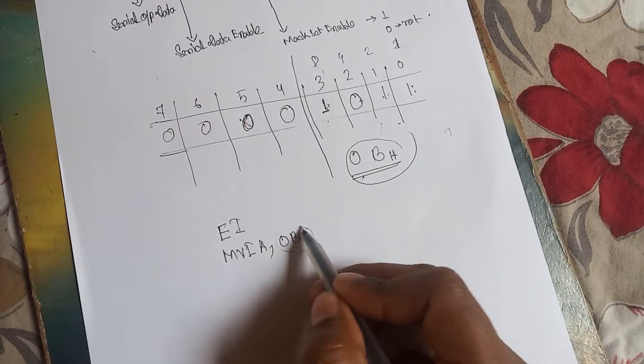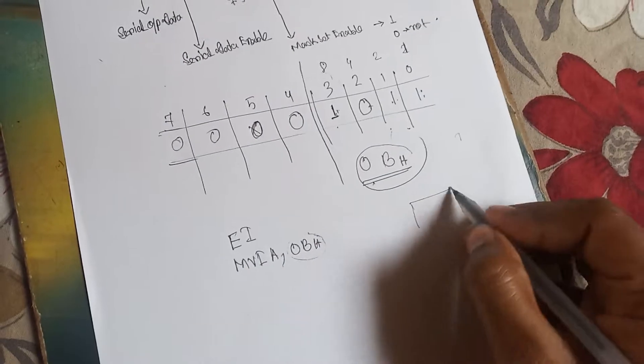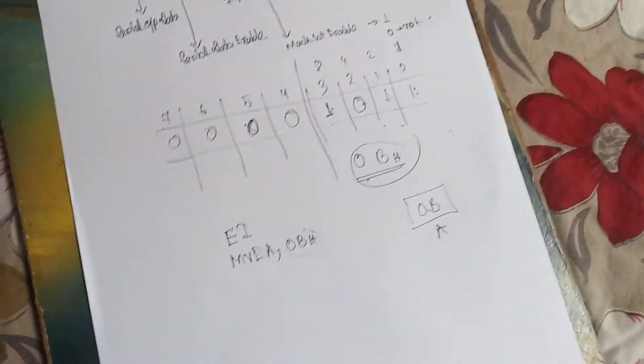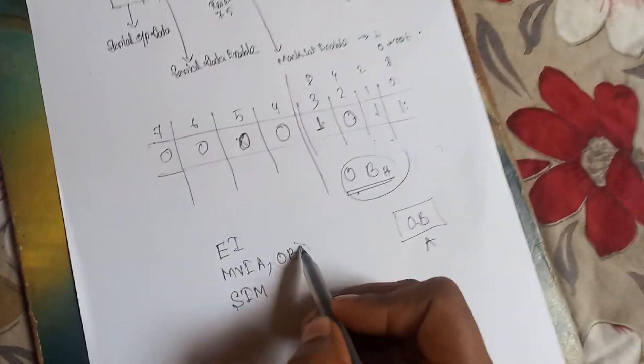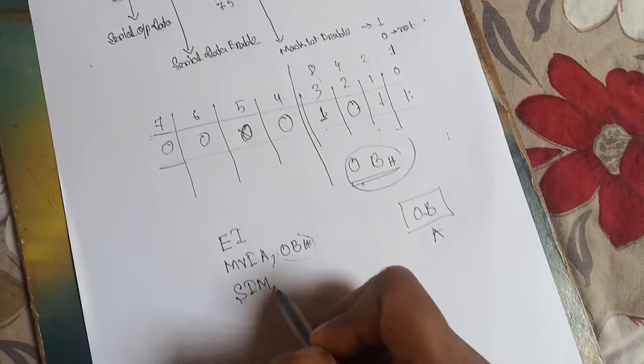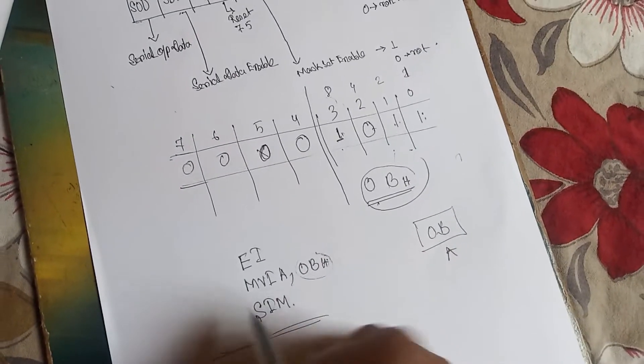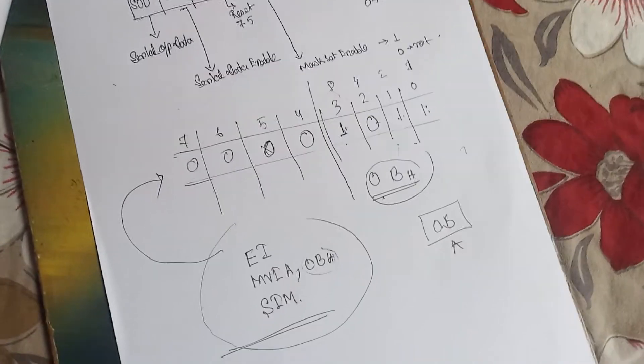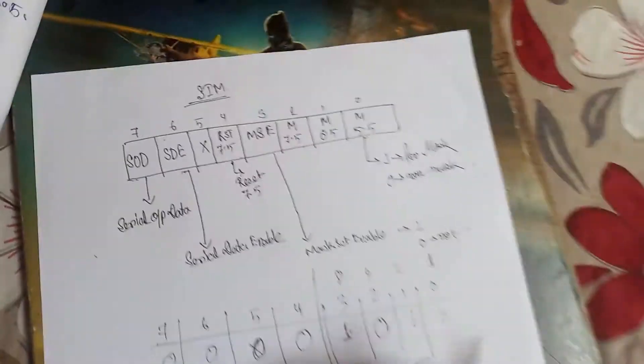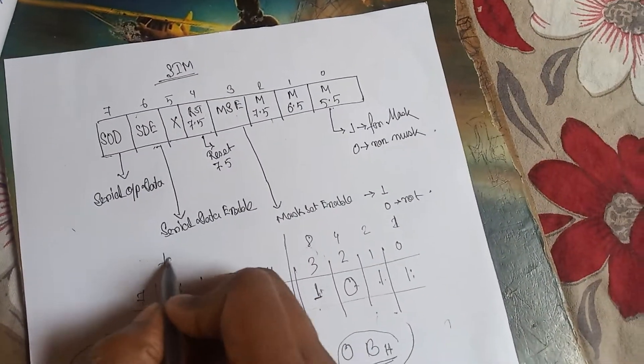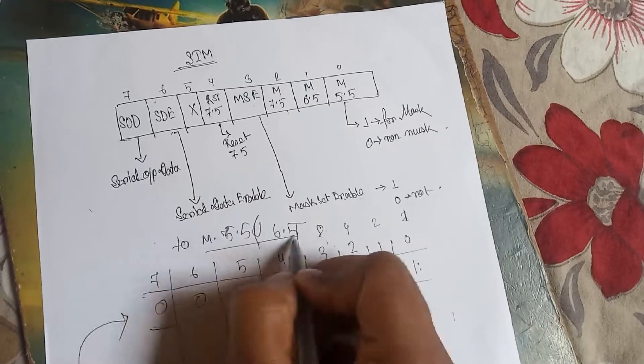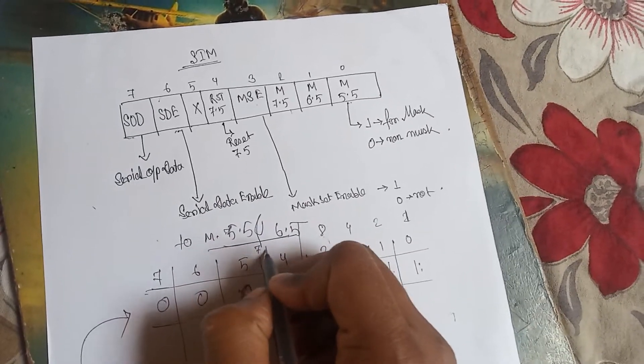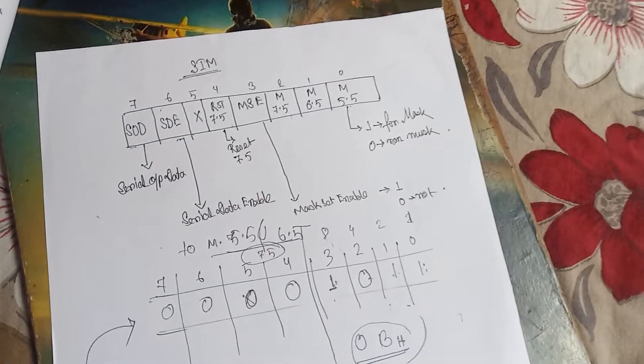From this instruction, the value of 0B is stored into our register, stored into accumulator in this case. And then simply write SIM. That's mean this value goes to the SIM register. So this is the simple program according to this ALP. That's mean write ALP to mask 5.5 and 6.5 but does not mask 7.5. So this is the ALP of this instruction.